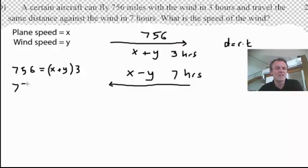And the time with the wind is three hours. Remember, I've got an x and a y. I always need two equations to solve for two variables. The other one, 756, is still the same distance coming back against the wind. But this time, its speed is x minus y. And this time, the time is seven hours. And that is pretty much it - those are the two equations. Distance equals speed times time, with the wind and against the wind.